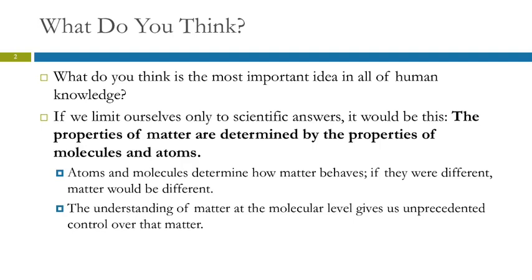What that means is that the qualities of this benchtop — it's hard, it's shiny, it's black — those properties come from the properties of the individual atoms and molecules that make it up. When we understand matter at this particulate level, the molecular level, it gives us control over that matter. Because if we want to make a plastic that has a different density or a different color or whatever, we can do that by altering the molecules that are in it.